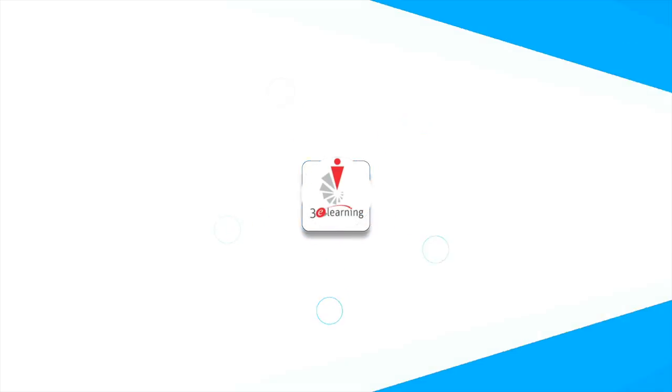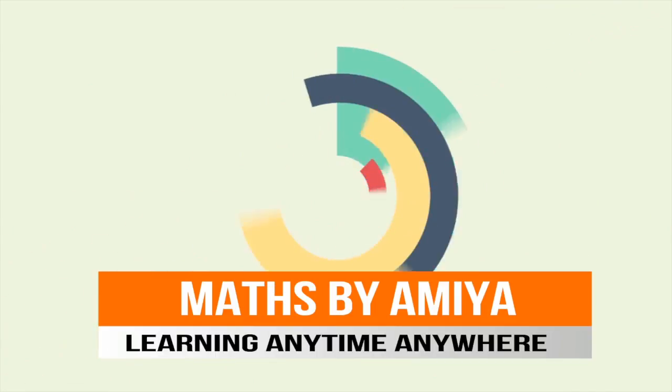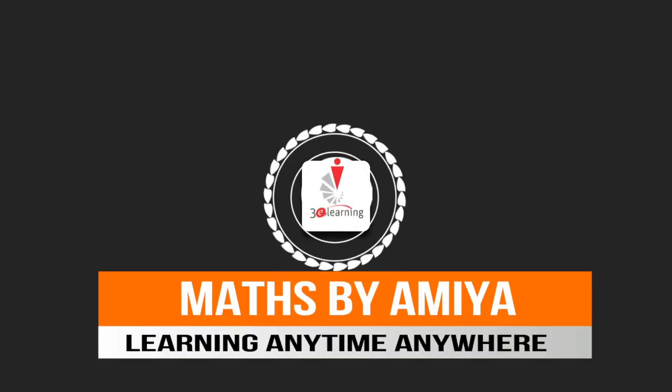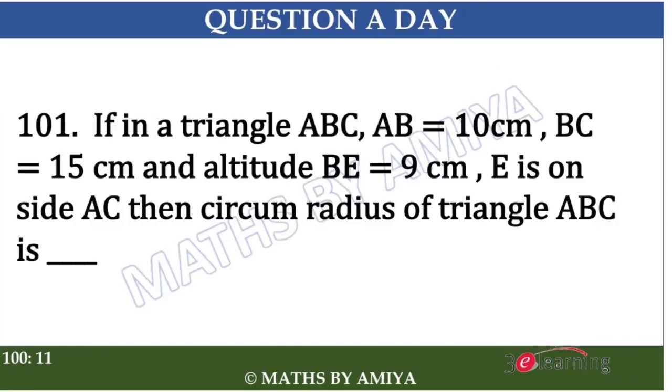To understand this question the best way possible, I am creating a diagram for you. We have triangle ABC in which AB is 10 centimeters, BC is 15 centimeters. Given we have altitude BE which is nothing but 9 centimeters.